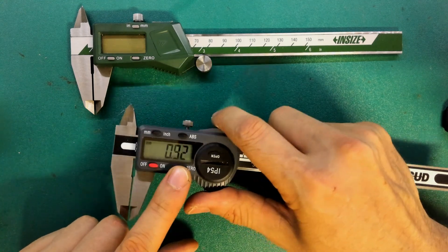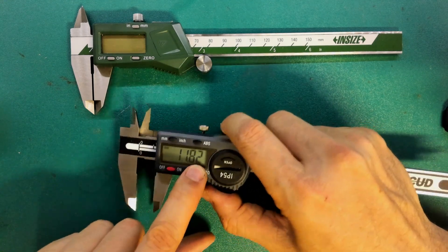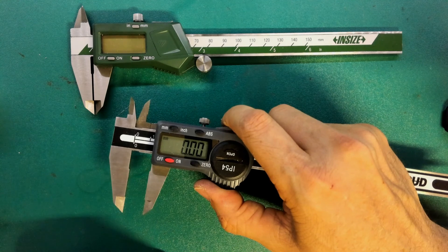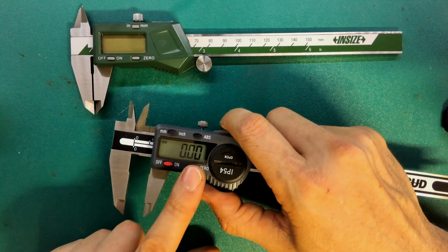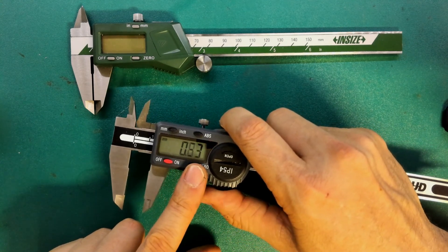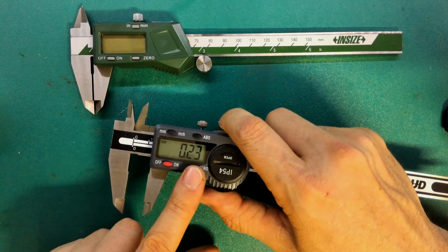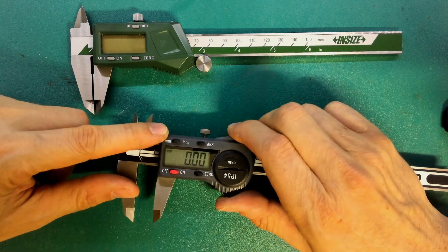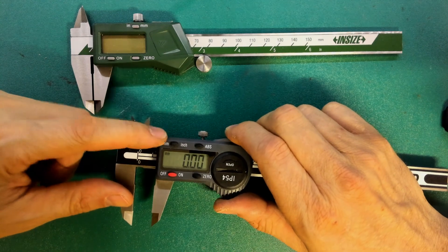If you wanted to measure how much wider something was to something else, you could measure the first one, zero it, and measure the second one and it might show you a very subtle difference in the sizes of them. You can also change your measurement units between millimeters and inches.